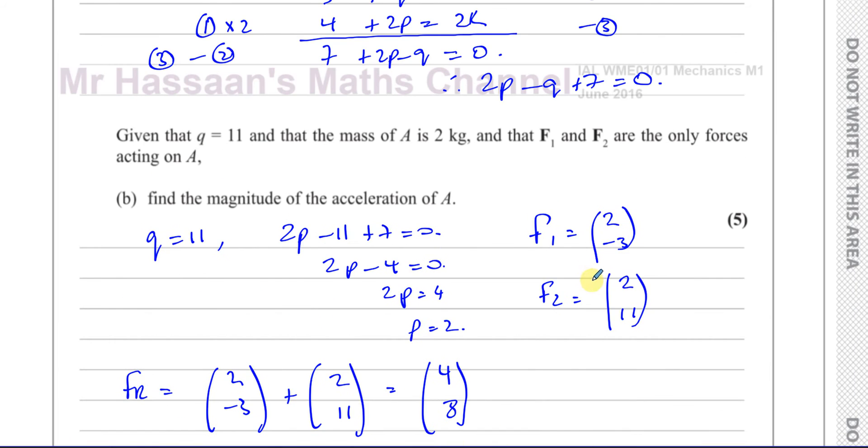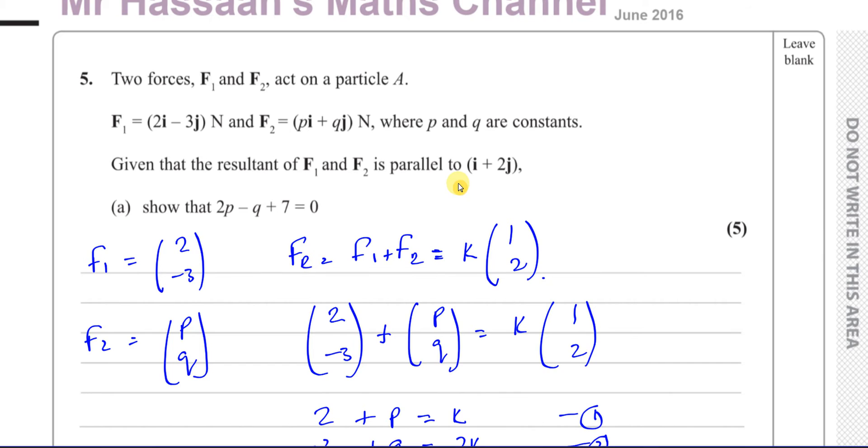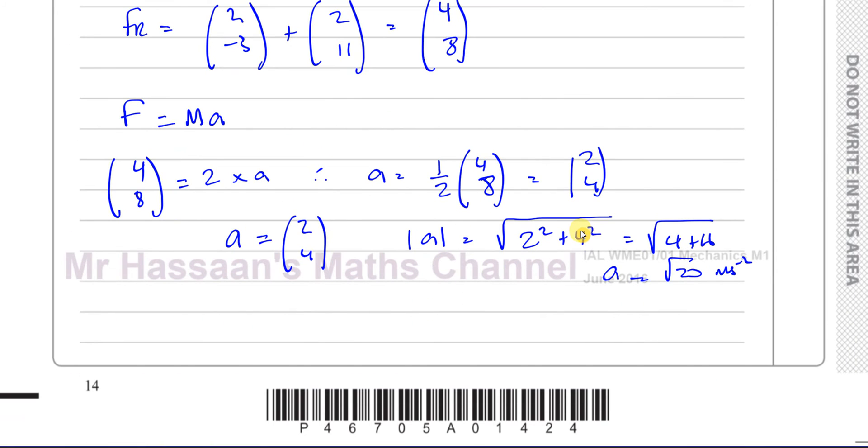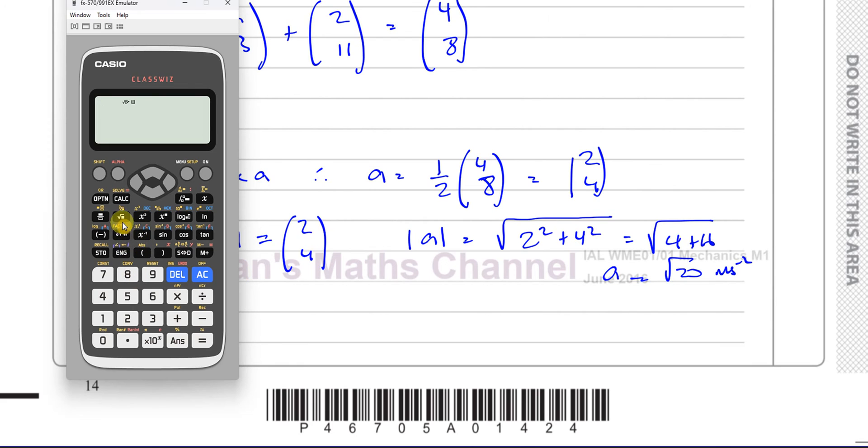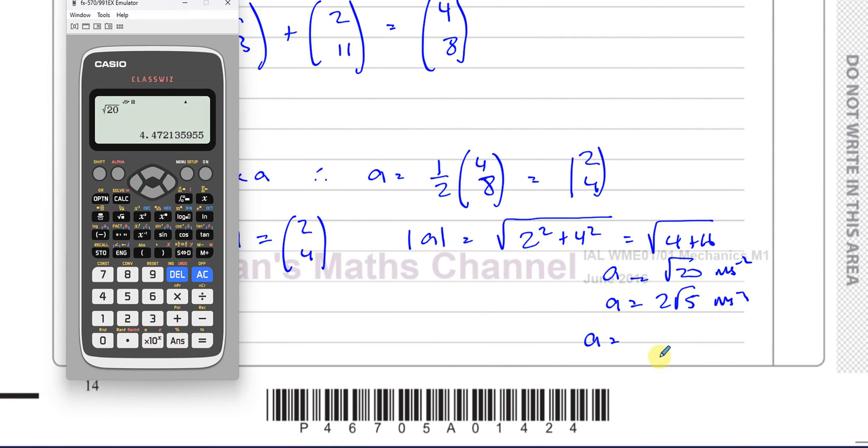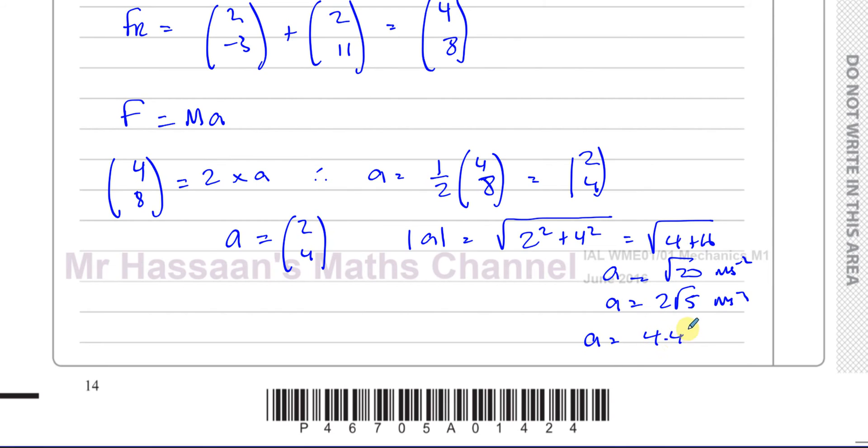Because it's all SI units here, Newtons. So meters per second squared. We can say root 20, that's 2 root 5. In fact, in simplified surd form, it's 2 root 5 meters per second squared. And to 3SF, it will be 4.47 meters per second squared. That's acceleration.